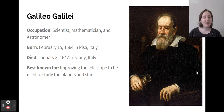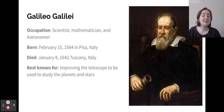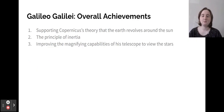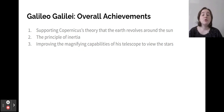Our final person is Galileo Galilei. He was a scientist, mathematician, and astronomer. He was born February 15th, 1564 in Pisa, Italy, and he died January 8th, 1642 in Tuscany, Italy. He was best known for improving the telescope to study the planets and stars. His overall achievements were supporting Copernicus's theory that the earth revolves around the sun, the principle of inertia, and improving the magnifying capabilities of his telescope to view the stars.